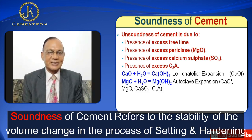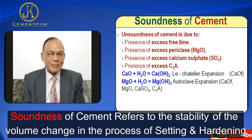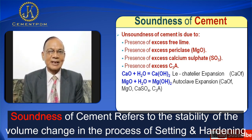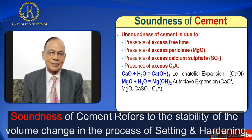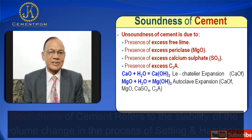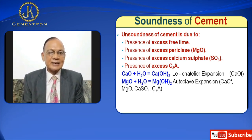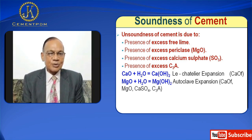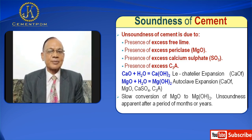This is Le Chatelier expansion because of the free lime. Autoclave expansion is mainly because of the presence of excess MgO. Here again the reaction is MgO + H2O gives magnesium hydroxide. The density of magnesium hydroxide is less compared to MgO. D equals M by V — mass is constant, reaction is taking place in the same mass — and therefore volume expansion takes place, and because of that, unsoundness occurs. This slow conversion of MgO to magnesium hydroxide means the unsoundness because of periclase or excess MgO is apparent only after a period of months.